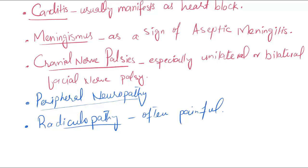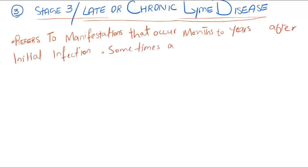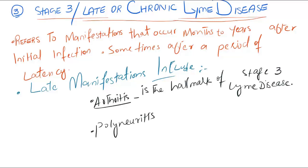The last stage is stage 3, or chronic Lyme disease. It refers to manifestations that occur months to years after initial infection, sometimes after a period of latency. Late manifestations include arthritis, also known as Lyme arthritis, which is the hallmark of stage 3 Lyme disease.